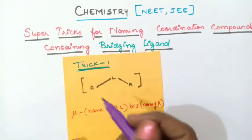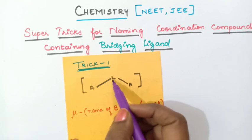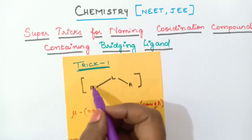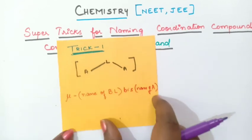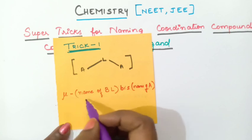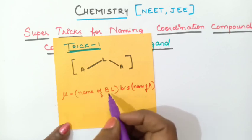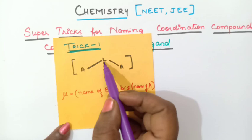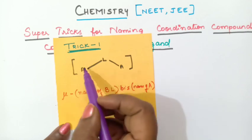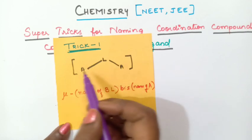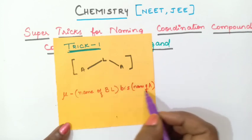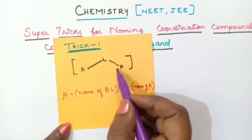The first trick: there is a ligand which is connected to same groups on both the sides. If it is connected to same groups on both sides, first you will write mu — this symbol is called mu-dash — then write the name of the bridging ligand, then write bis (meaning 2, because same type of groups are present), and then write the name of the molecule, A.